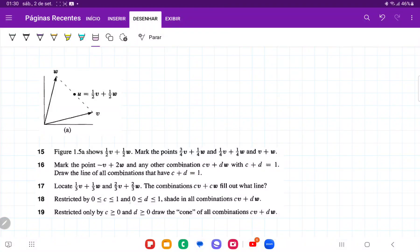So for number 18, it says that restricted by c is between 0 and 1 and d between 0 and 1, shade in all combinations of cv plus dw.